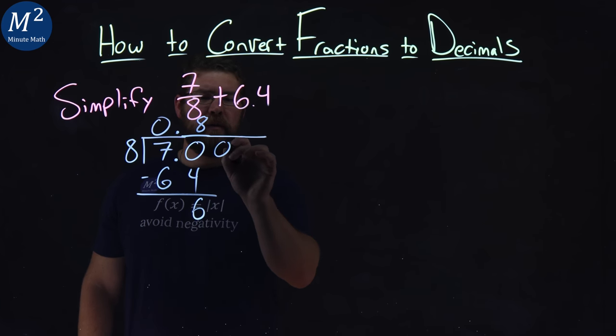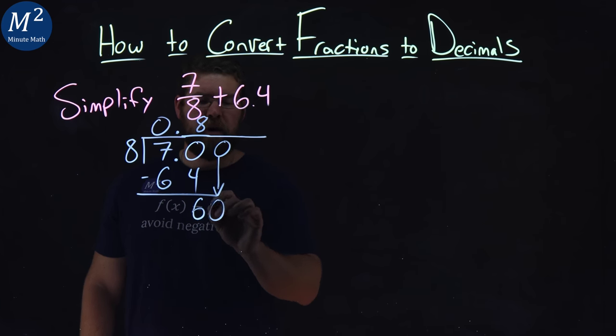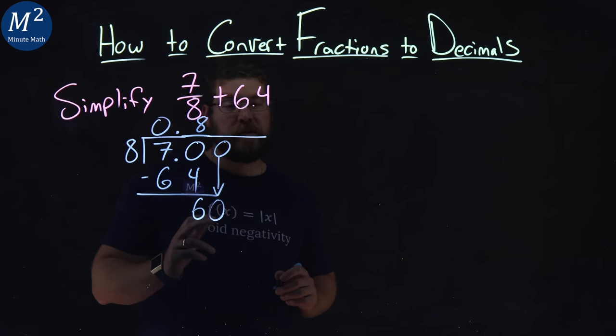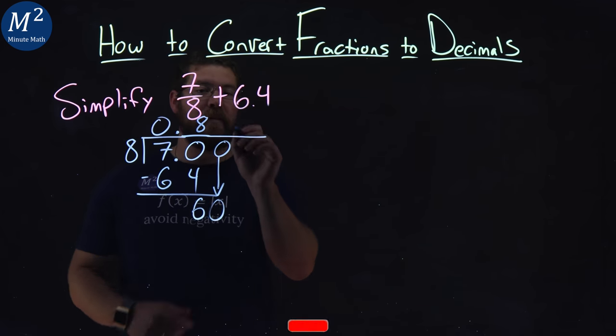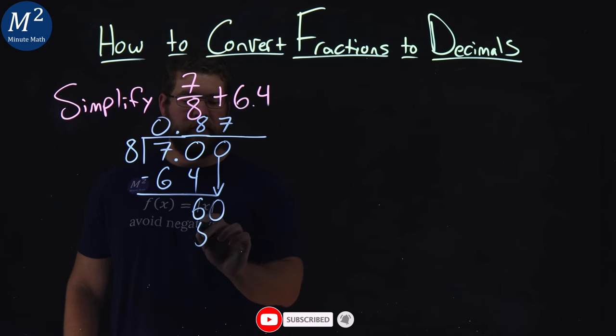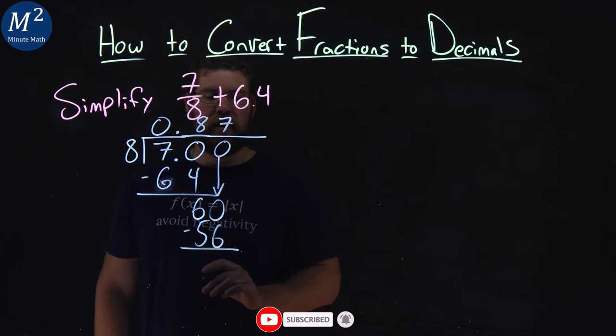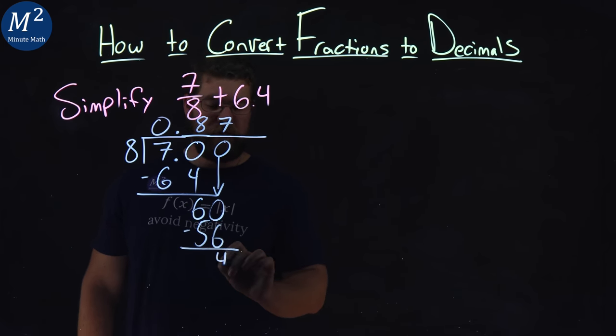We need some more place values. Put a 0, bring it down right here. Does 8 go into 60? Well, that's going to be 7 times because 7 times 8 is 56. 60 minus 56 is 4.